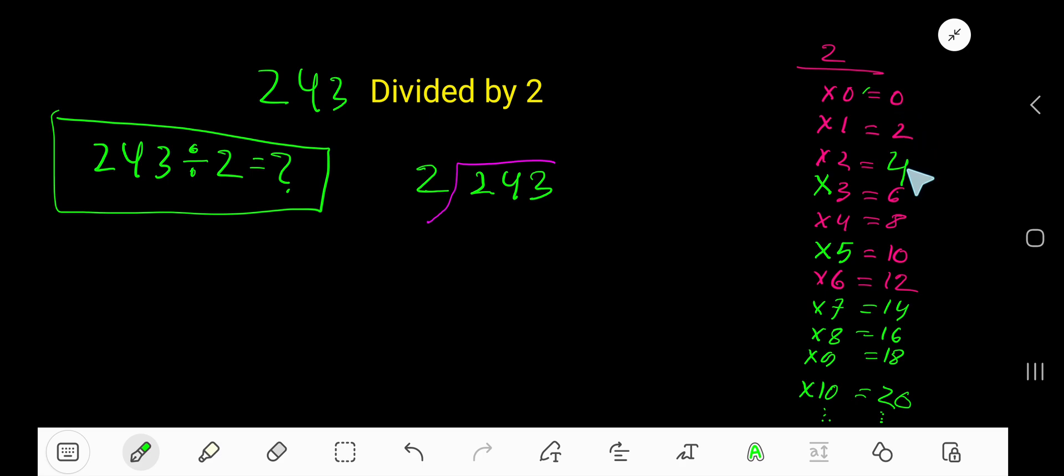6 plus 2 is 8, 8 plus 2 is 10. 2 goes into this 2 how many times? 2 goes into 2 one time. 1 times 2 is 2, subtract, 0. Bring down this digit 4.